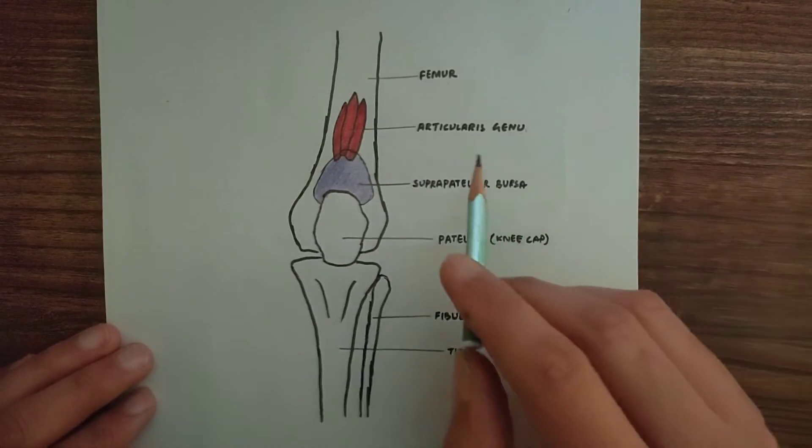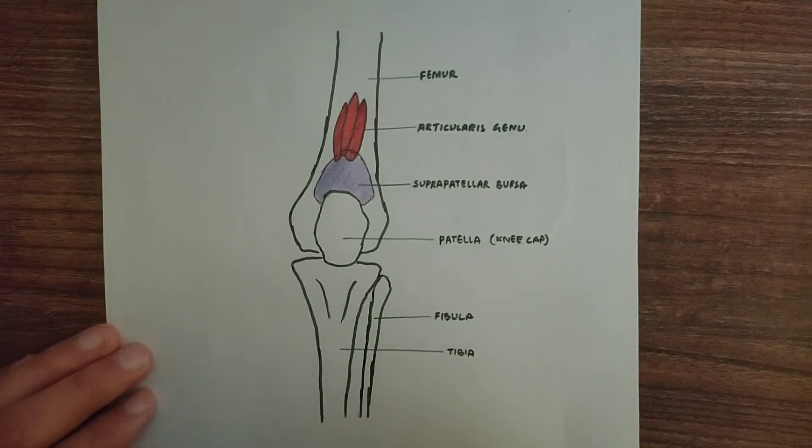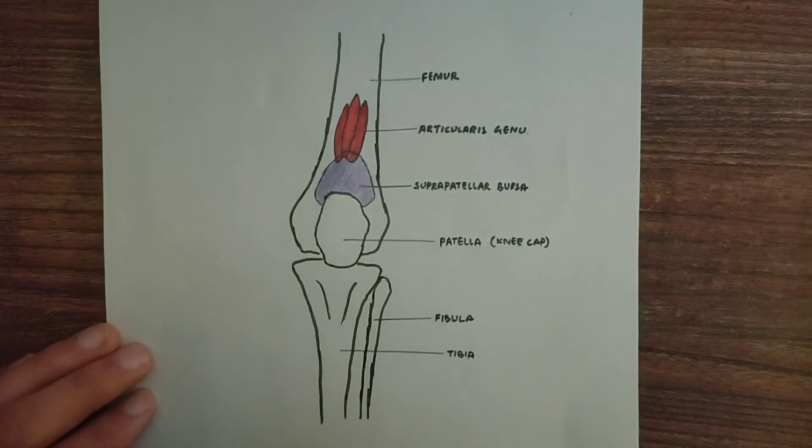Now let's see the nerve supply of Articularis genu muscle. It is innervated by the femoral nerve.